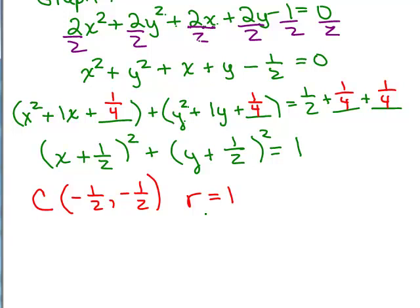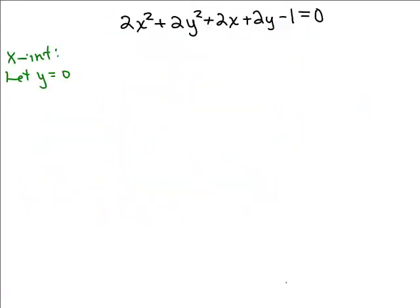The other thing we were asked to do was find any intercepts. Let's find the x-intercepts by letting y equal 0. Plugging in 0 for y in both places gives us 2x squared plus 2x minus 1 equals 0. This does not factor, so we'll have to use the quadratic formula.